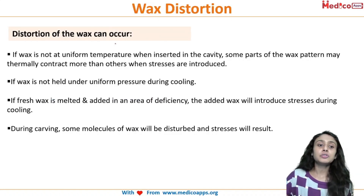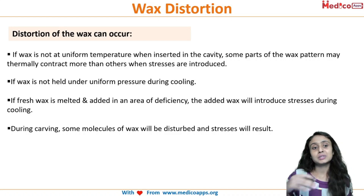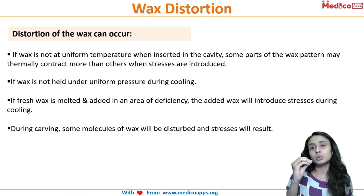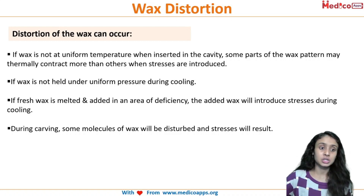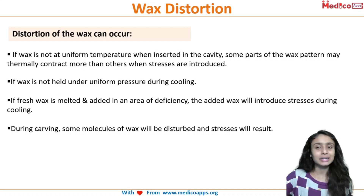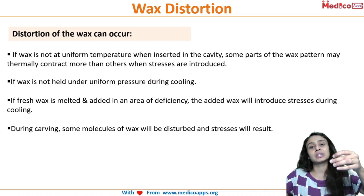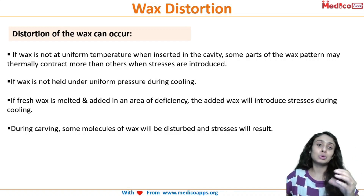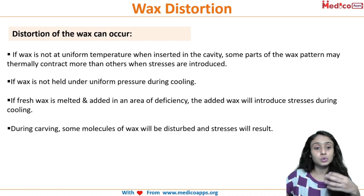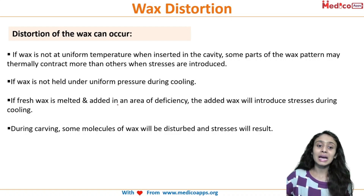Factors causing distortion cannot be totally eliminated by the operator. Distortion can occur if the wax is not at a uniform temperature when inserted in the cavity — some parts may be very soft and some may be hard. If the wax is not heated uniformly, there will be a lot of distortion. If the wax is not held under uniform pressure during cooling — with more pressure on one part and less on another — that change in pressure across the wax can also lead to distortion.